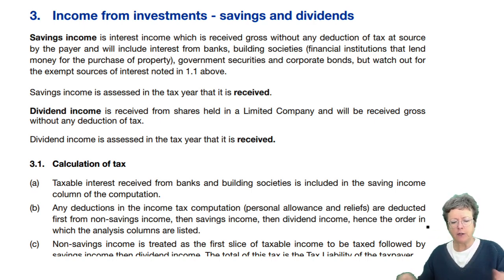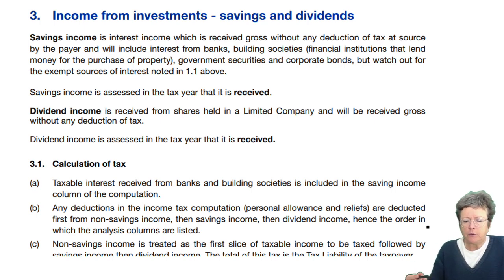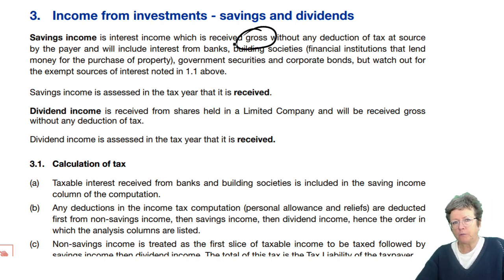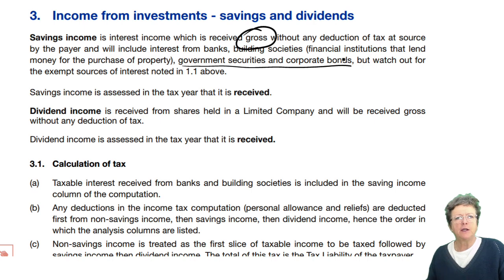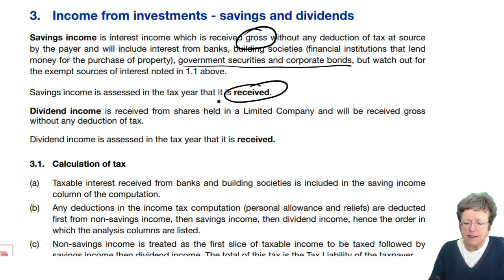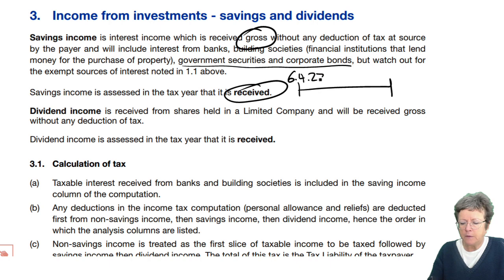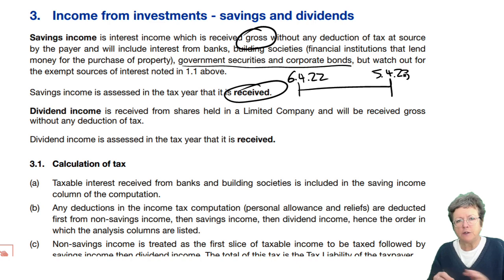Savings income — interest on income received gross. It's always received gross now, without any deduction of tax at source. Always gross, no tax deducted at source, from banks, building societies, things like that. Be careful for the exempt incomes we looked at earlier — it's unlikely you will get government securities or corporate bonds. You're really looking at bank and building society interest. And it's what you actually receive in that tax period, from the 6th of April to the 5th of April.